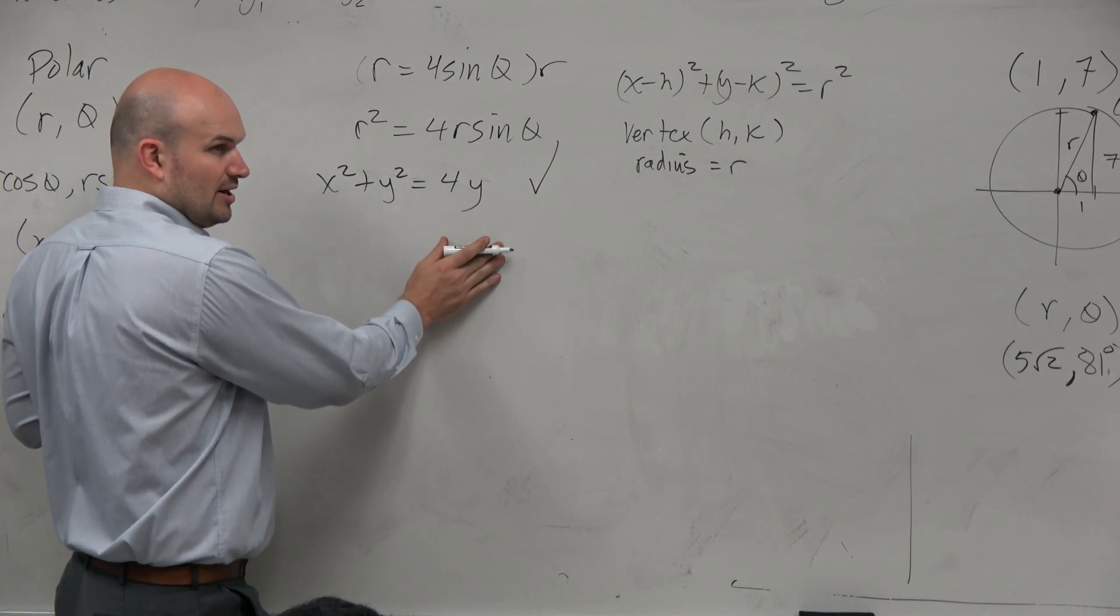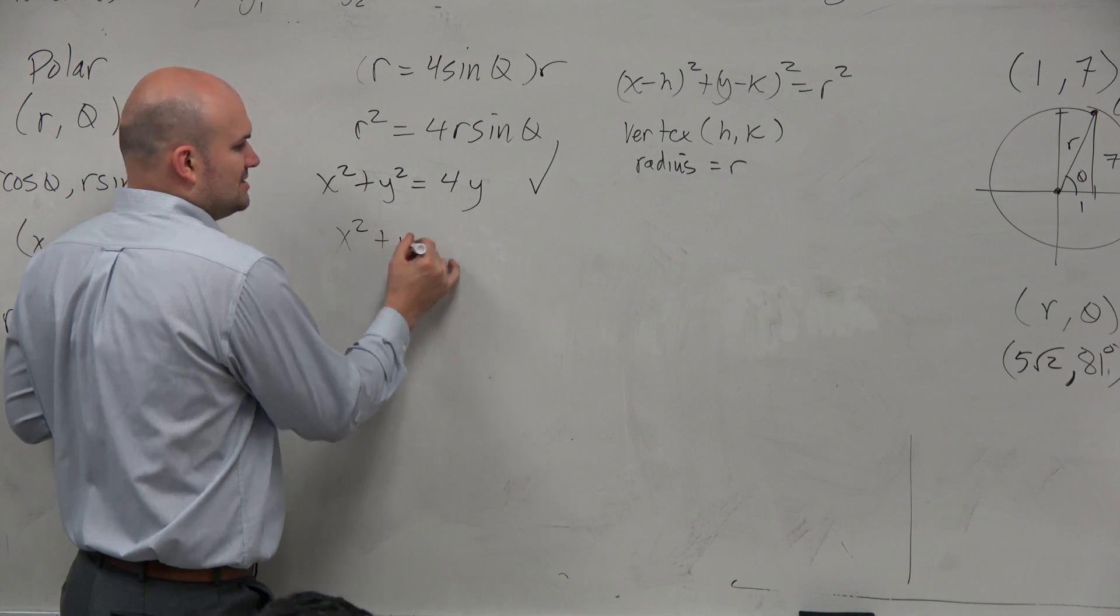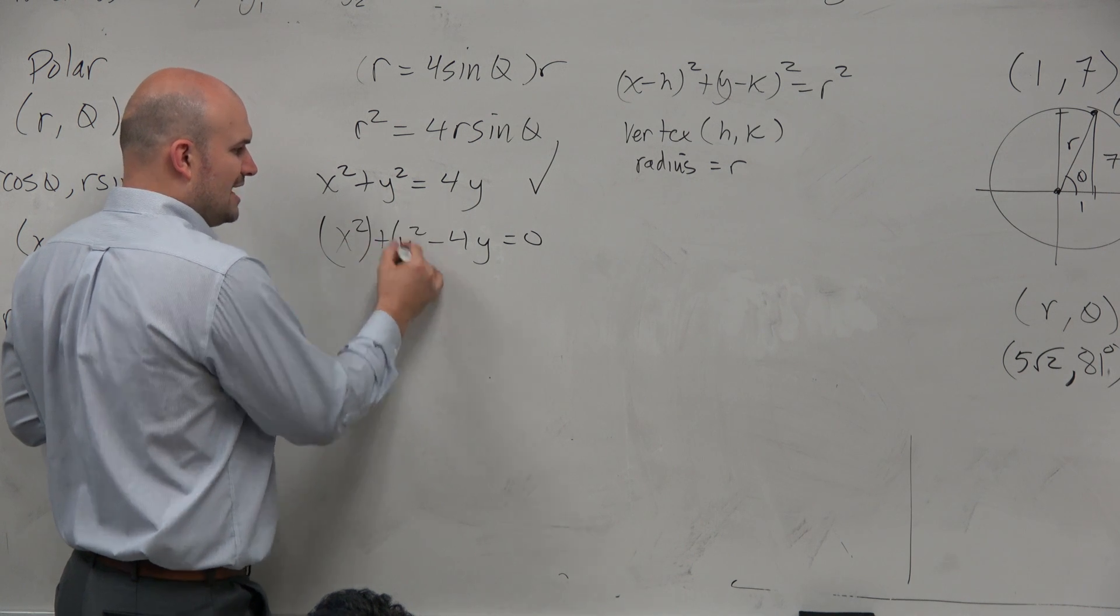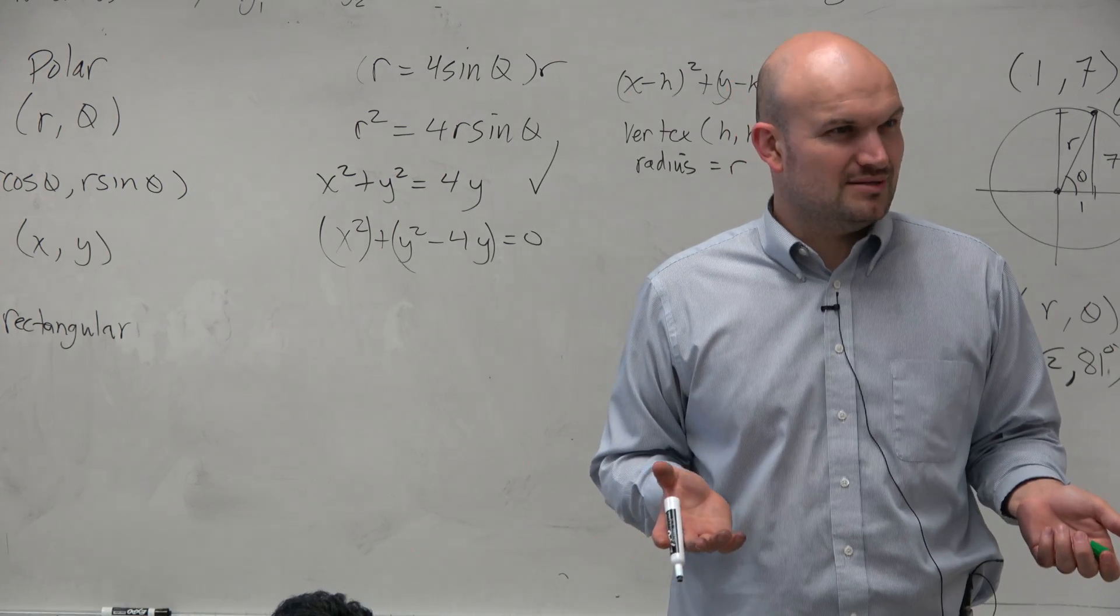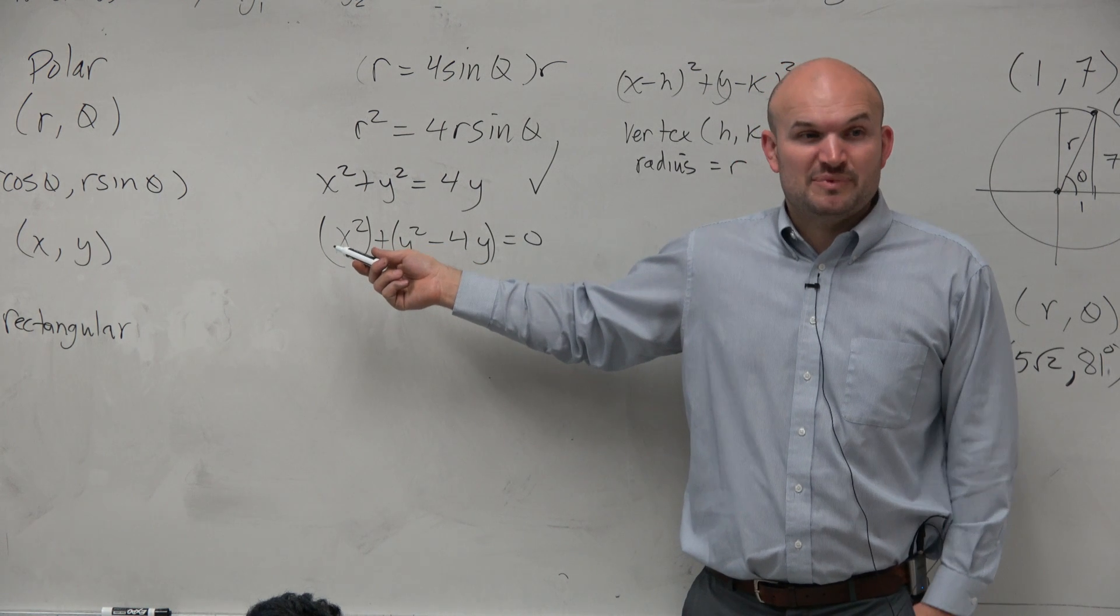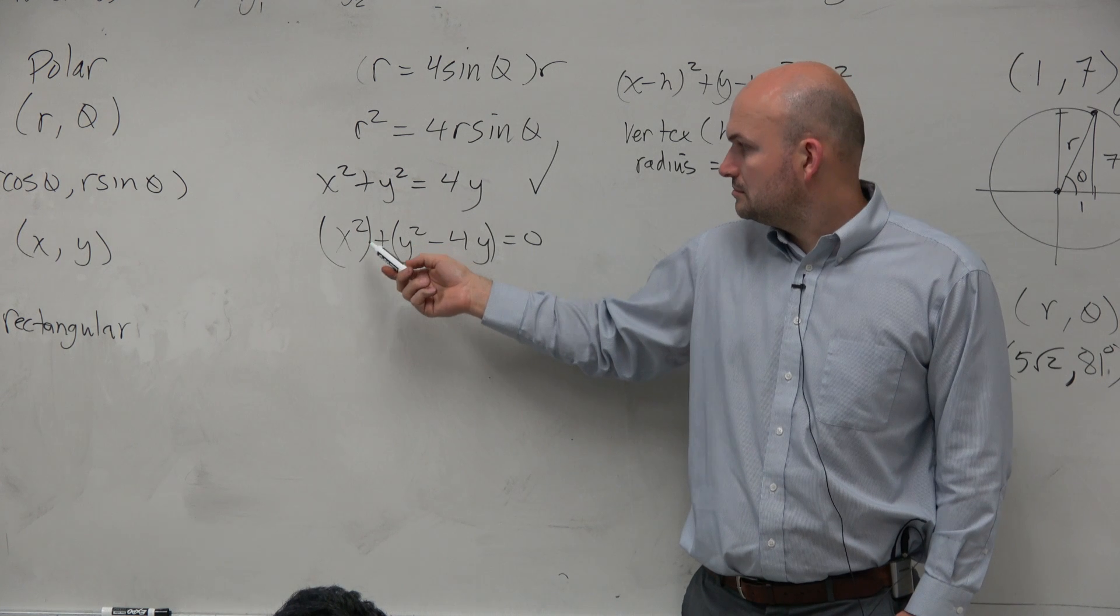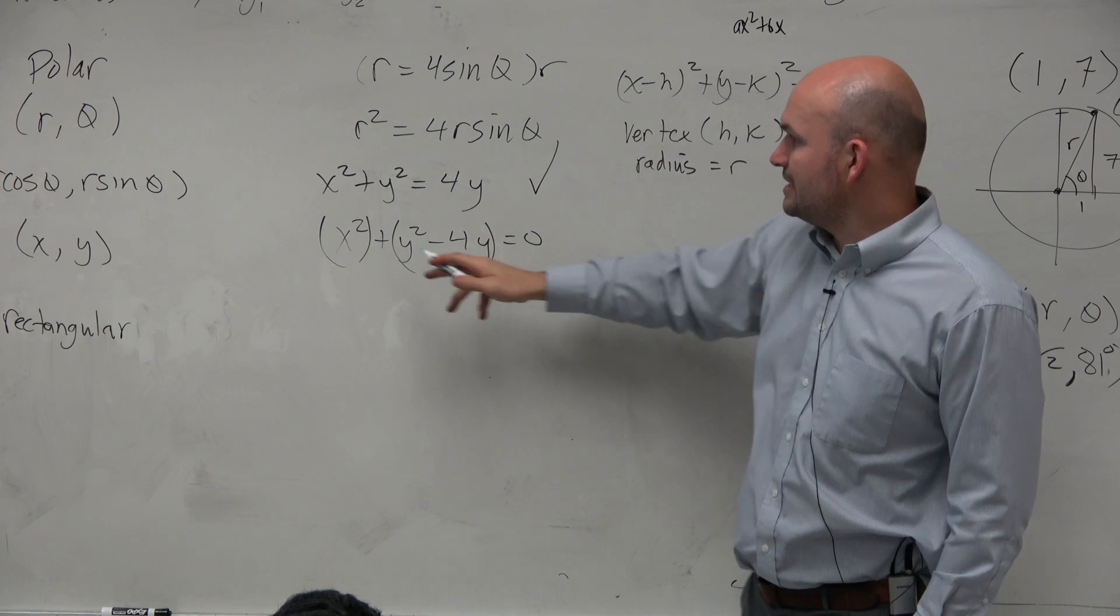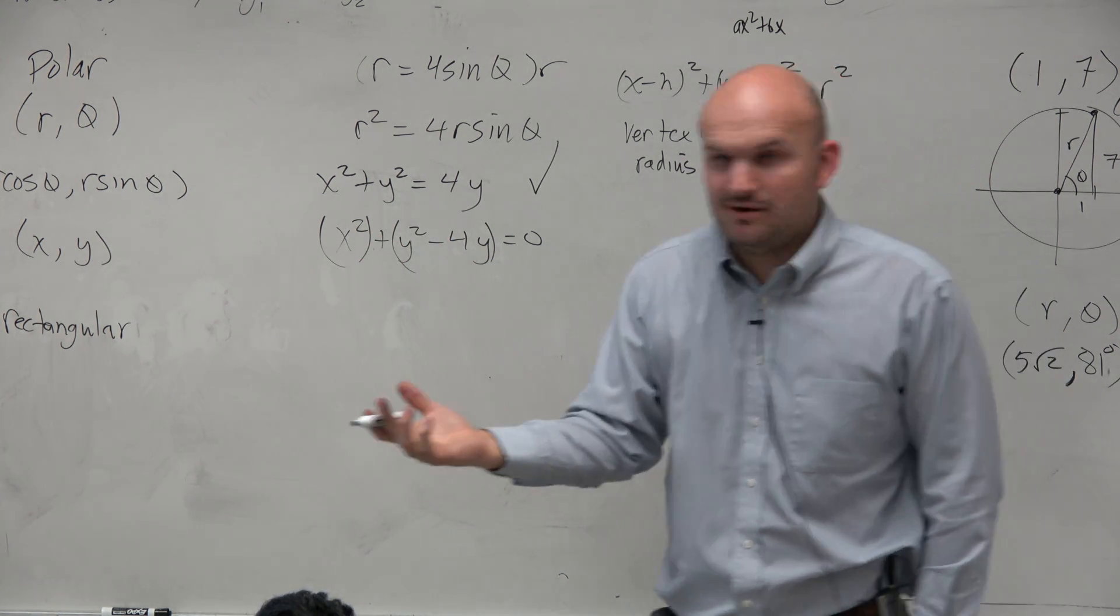So to complete the square when you have two variables, group the terms together. Group all the x's and all the y's. So I have my x terms and I have my y terms. Now, does x squared, do I really have to complete the square with x squared? Do I have to do anything with x squared? Do I have a b in terms of x? What is b in this case? What is b, a x squared plus bx. Is there an x? No. So my b is technically 0. So I can't really complete the square here.